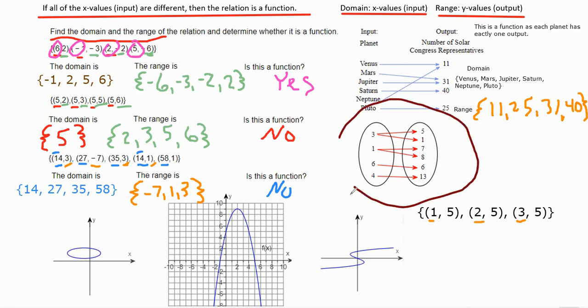And for this diagram here, mapping, the input, call this our x and this is our y, that the domain would be 1, 3, 4, and 6. And the range is the y values, which would be 5, 1, 7, 8, 16, and 13.